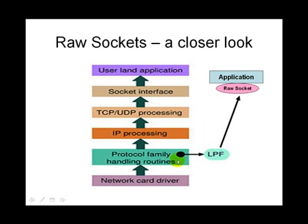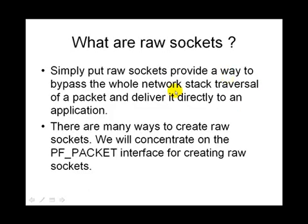In Linux, using packet filters, what we can do is that as soon as a packet comes in from the network driver itself, we can punt it directly to the application by bypassing all those steps. At that point the packet is still full with all the headers — the ethernet header, IP header, TCP header, etc. — and the packet is sent out to the raw socket to which an application is subscribing. This would be your sniffer program. Simply put, raw sockets provide a way of bypassing the whole network stack traversal of a packet and delivering it directly to an application.